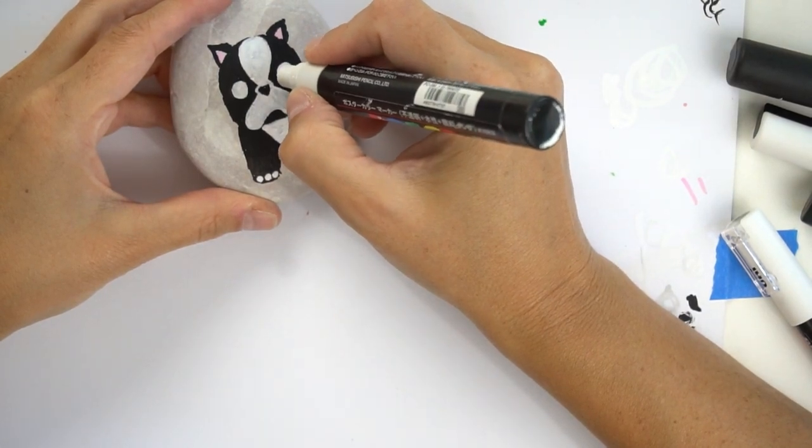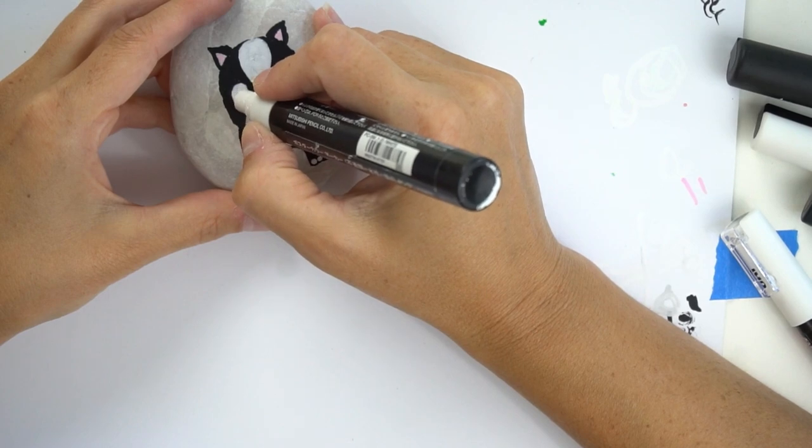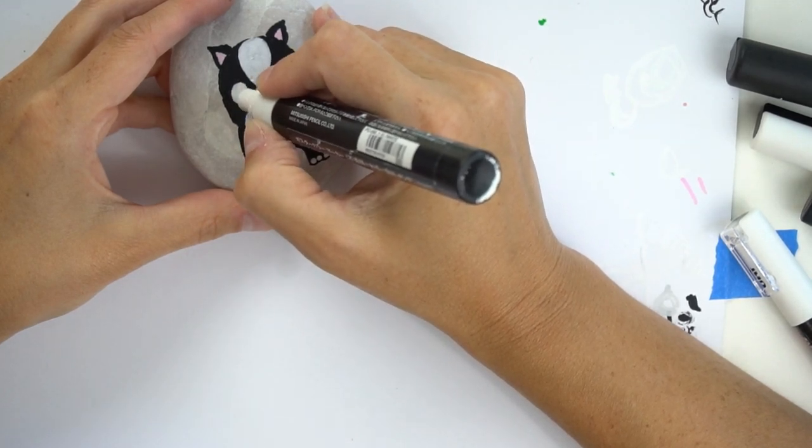We also need to do the blacks of his eyes. I feel like his eyes are a little high, so I'm going to pull them a little lower. We'll give them even bigger eyes by pulling them lower. I can always take away some of the top - it's easy to put black on top of white when it's dry.